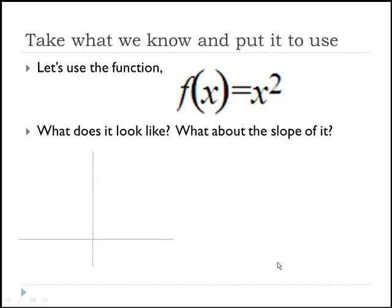We're going to first remind ourselves about the idea of a derivative and the formal definition of a derivative and what it means. So first let's take the function f of x equals x squared and graph that function. We know that f of x equals x squared is a parabola that goes through the origin, and we have some different points on this graph. If I wanted to know the function value of those points I could simply plug them in.